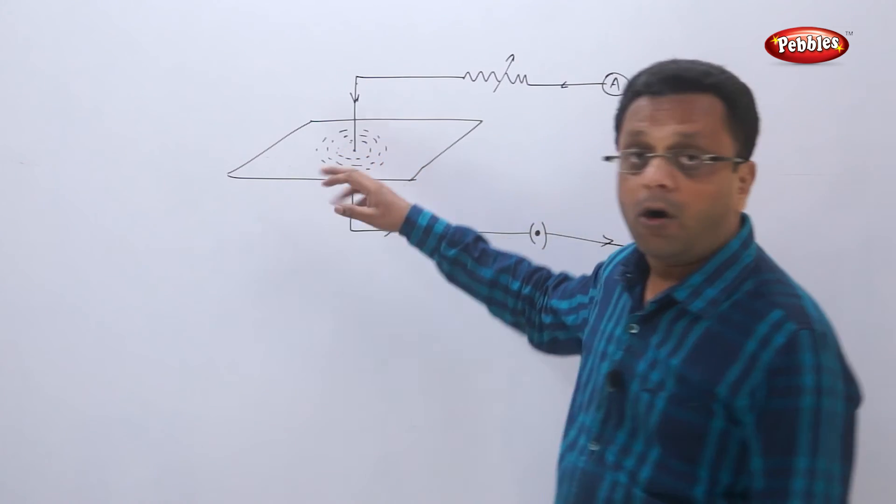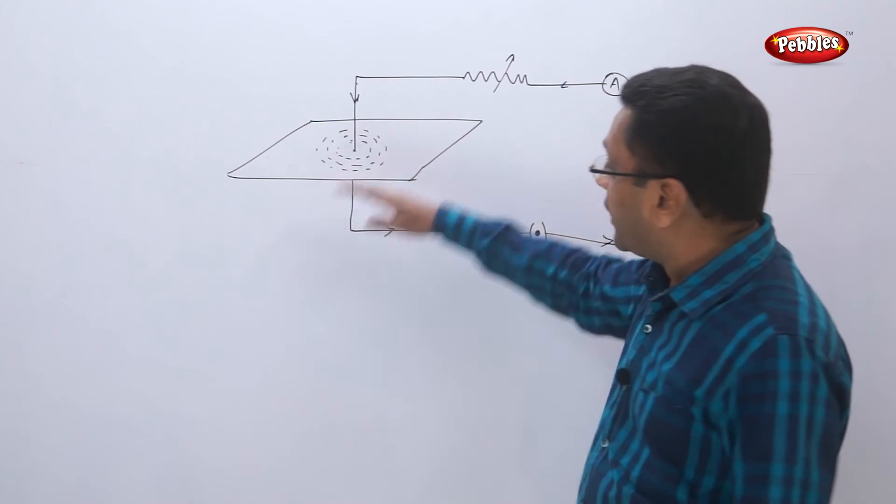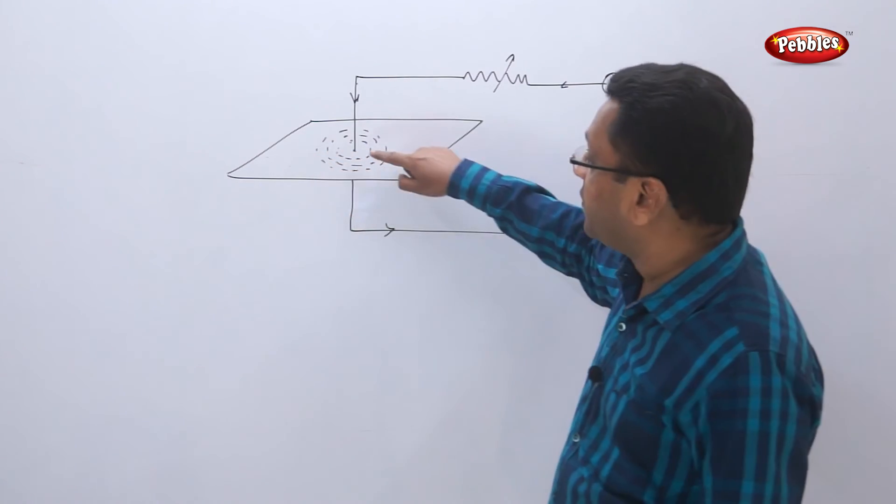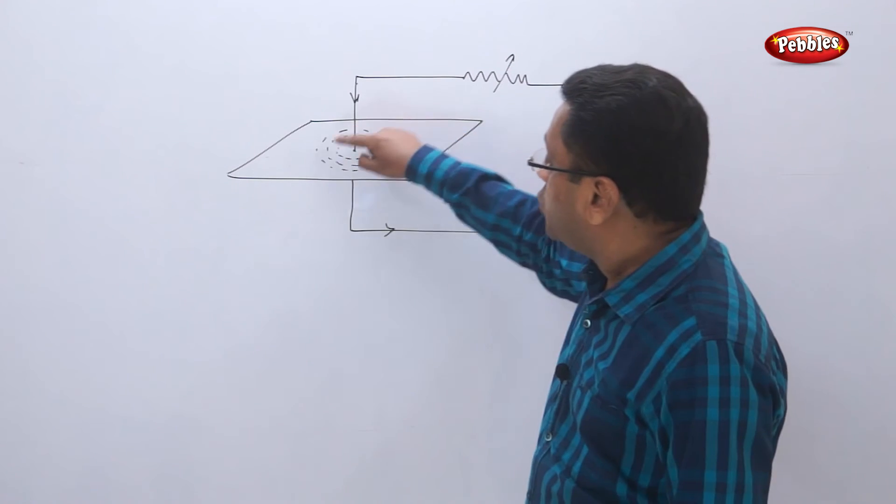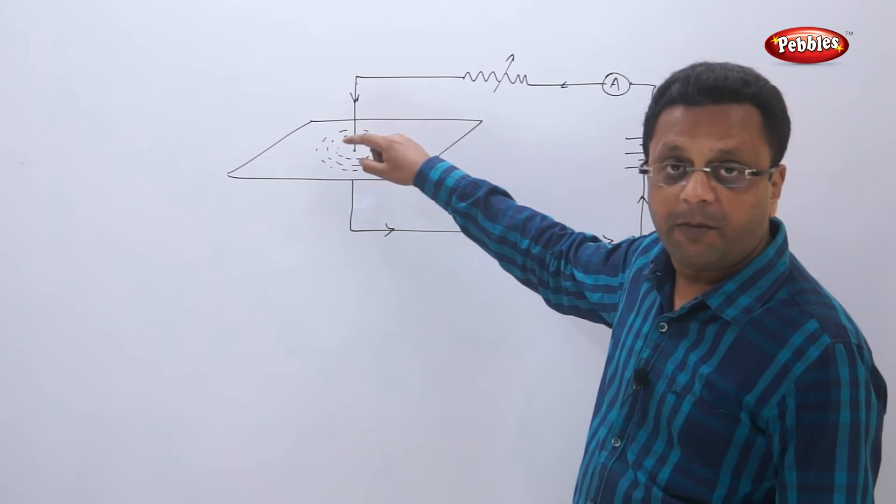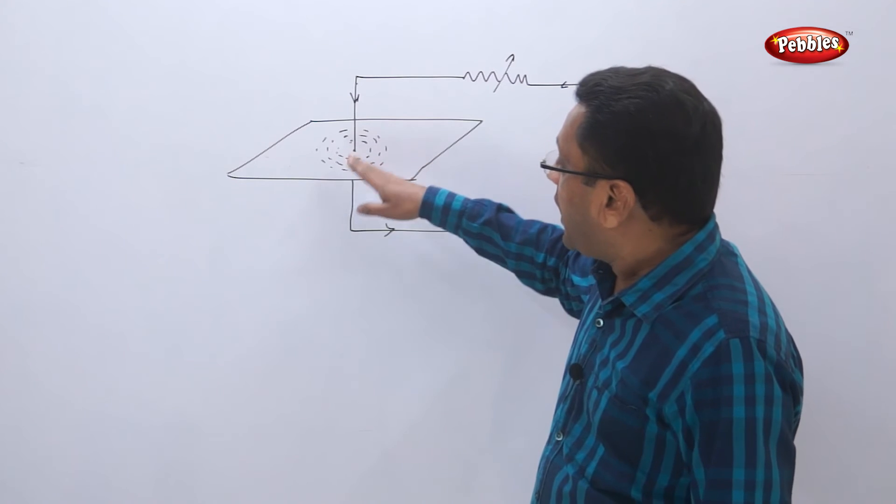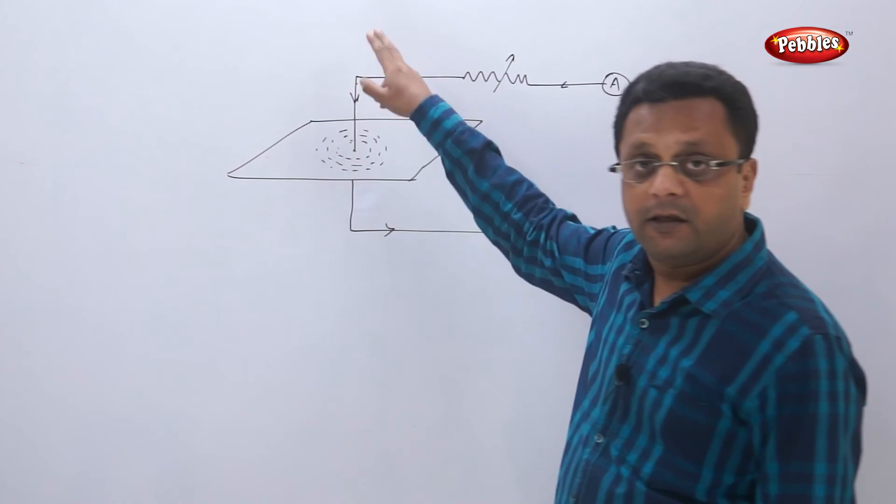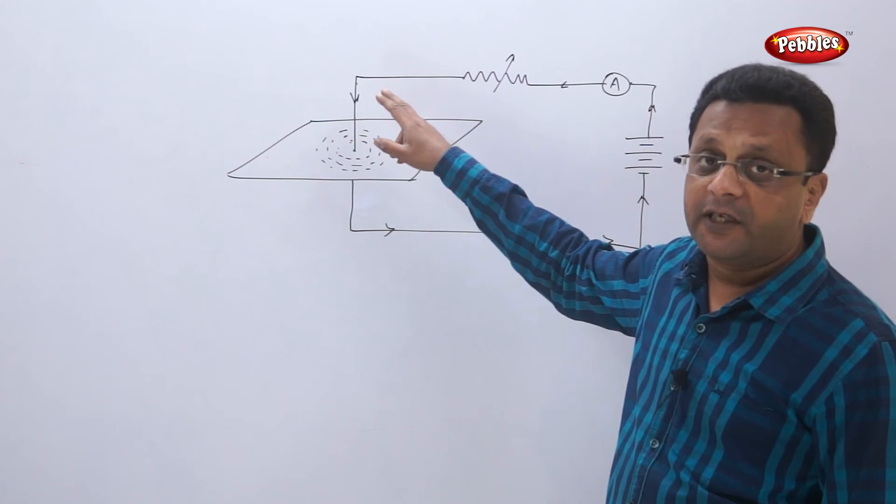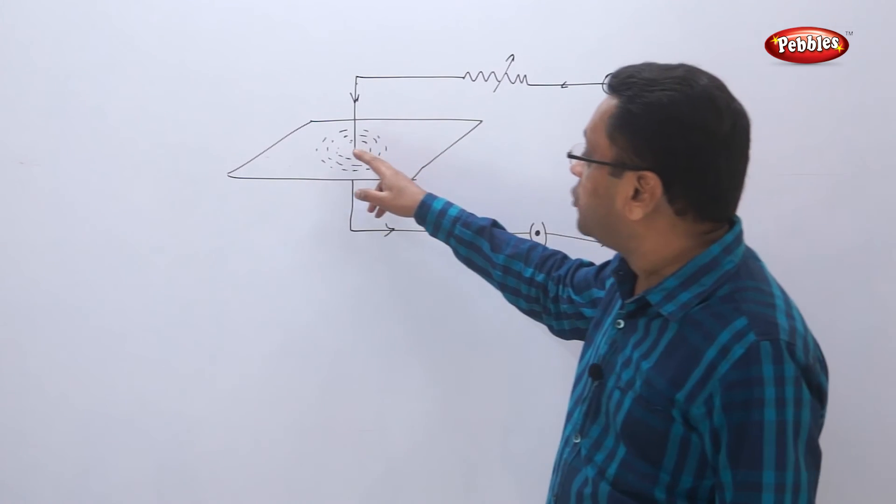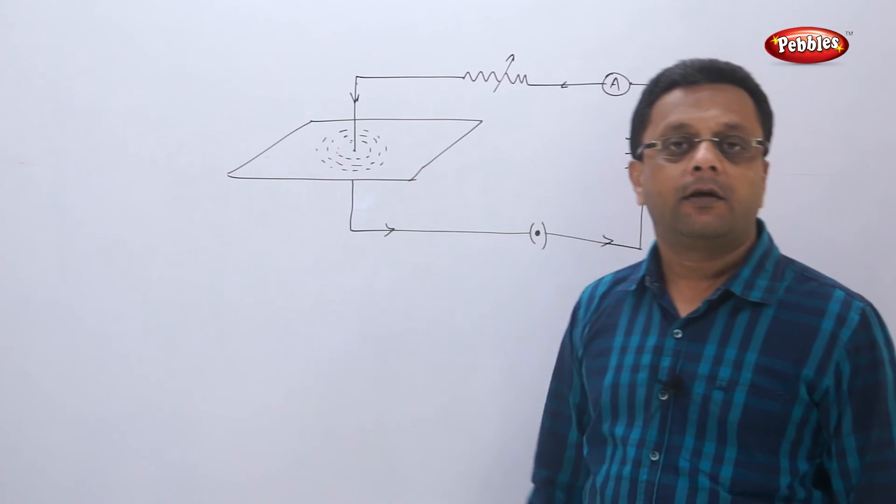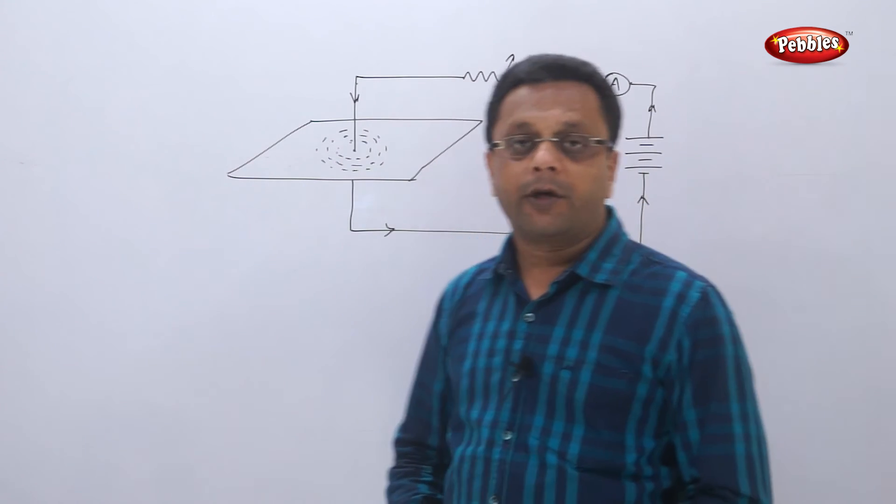Again, all the four rules are applied here. These lines never intersect each other. They show the perfect path. Then, near to the conductor, the magnetic field is dense or strong. And as you go away from the conductor, the magnetic field is weak.